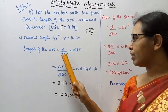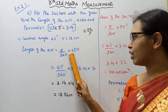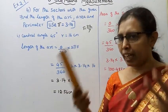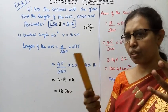The length of the arc is: theta by 360 into 2 pi r. Substituting the values and simplifying.